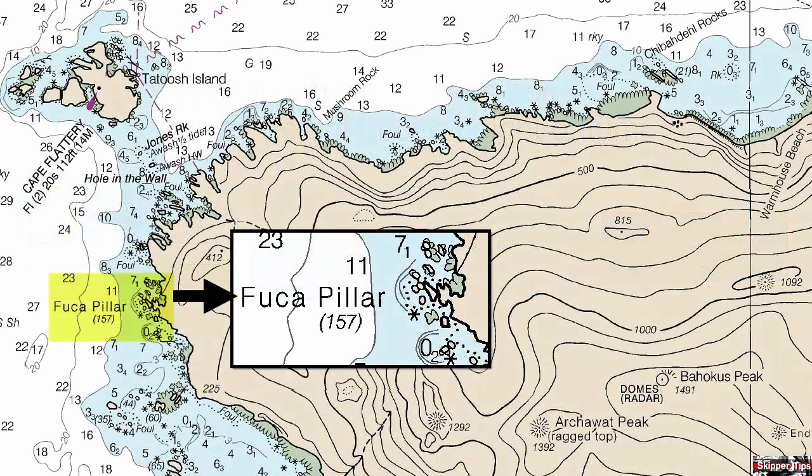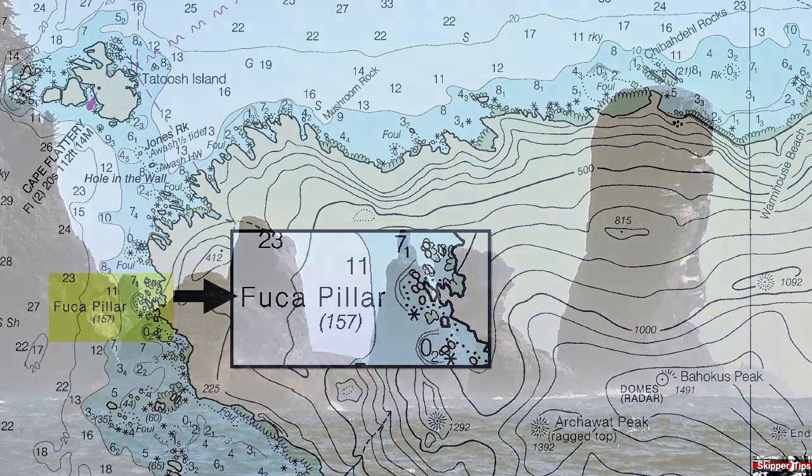Note this group of islets on the western side of Cape Flattery in Washington State. The cartographers have indicated the most prominent, called the Fuca Pillar, with a prominent height of 157 feet enclosed in parentheses. As you can see, it would be impossible for the cartographer to write this height onto the group of islets, so they indicate the height off to one side for clarity.